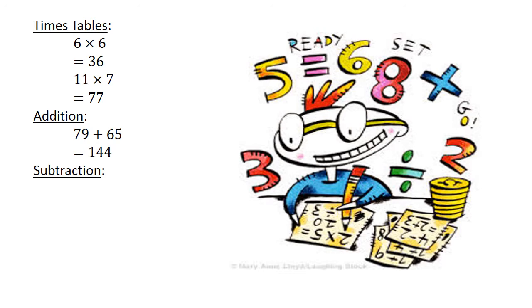Subtraction. 35 minus 47 equals negative 12. Division. 60 divided by 6 equals 10.